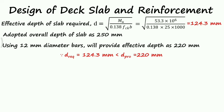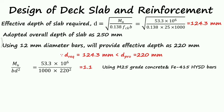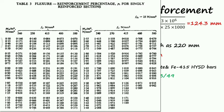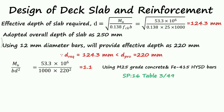Next, for reinforcement, we need the percentage of steel. MU divided by BD squared: MU is 53.3 kNm, B is 1000 mm, D is 220 mm, so MU divided by BD squared equals 1.1. Using M25 grade concrete and FE415 HYSD bars from SP-16 Table 3 page 49, we get percentage of steel corresponding to 1.1 as 0.322.